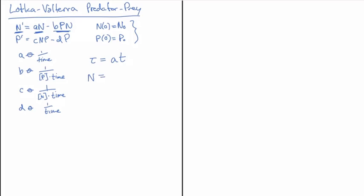Now n has units of n obviously, and the only thing in the collection of constants a, b, c, d that has n involved is c — you can see in the denominator we have units of n. So I'm going to want c in the denominator, and when it's in the denominator I end up with time in the numerator, which I'll cancel with a 1-over-time quantity — either a or d, and I'm going to choose a. If you're curious whether it makes a difference, try d instead and see how your equation differs — you'll end up with a non-dimensional parameter in a different place.